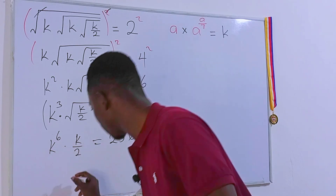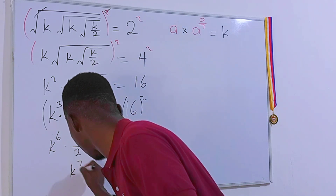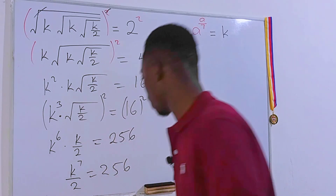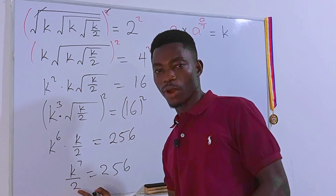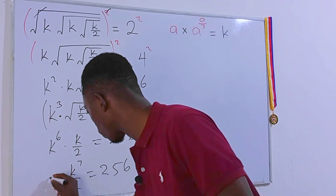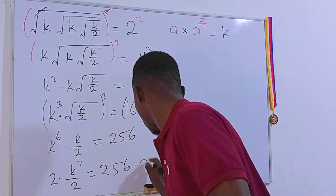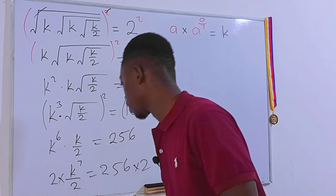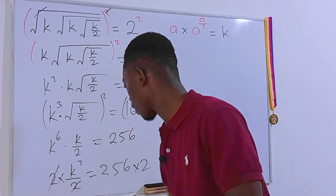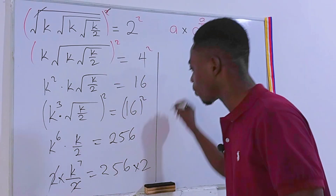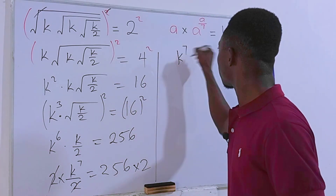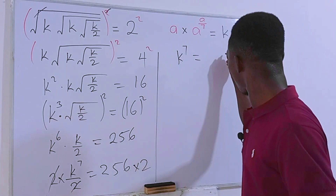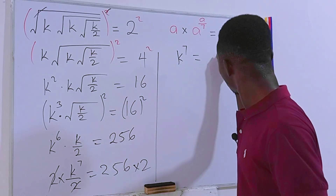We can simplify further: k to the sixth power times k is k to the seventh power, divided by 2, equal to 256. Let's get rid of the fraction by multiplying each side of the equation by 2. On the left hand side we have k to the power 7, equal to 256 times 2, which is 512.